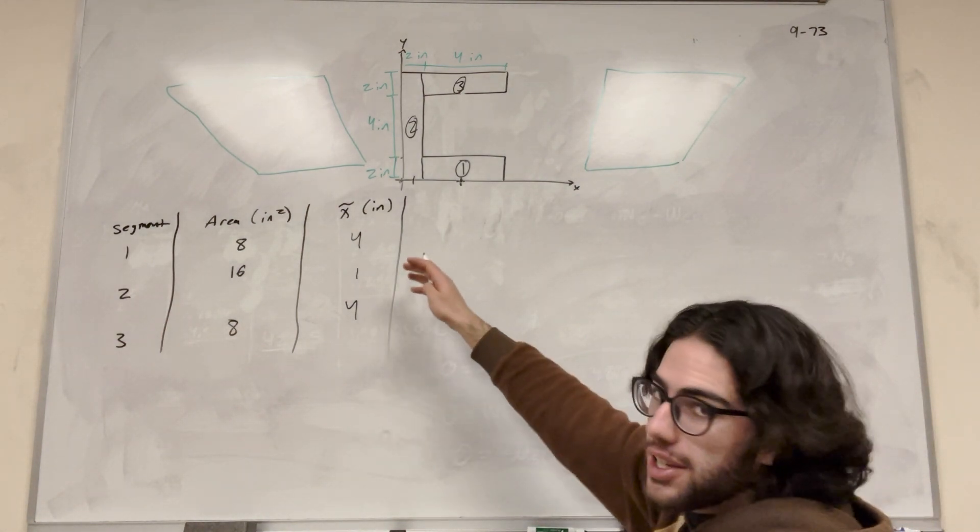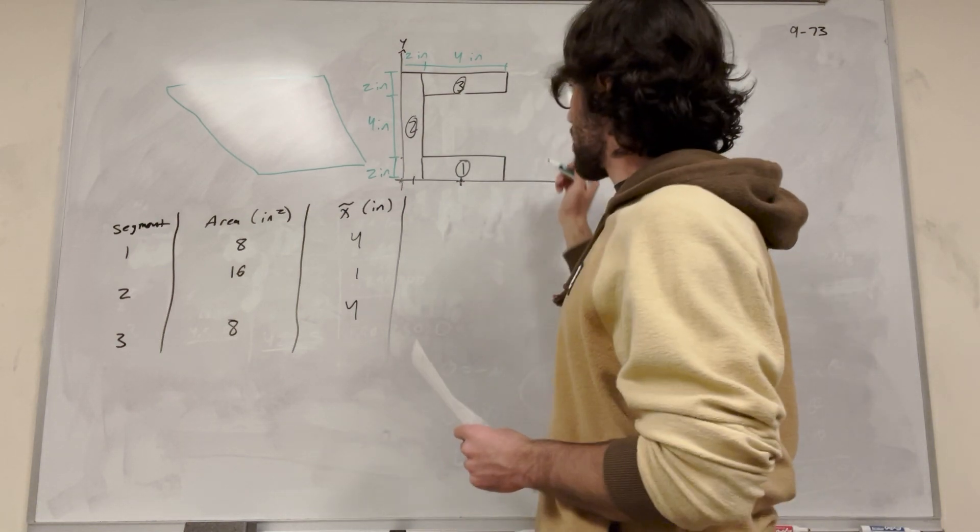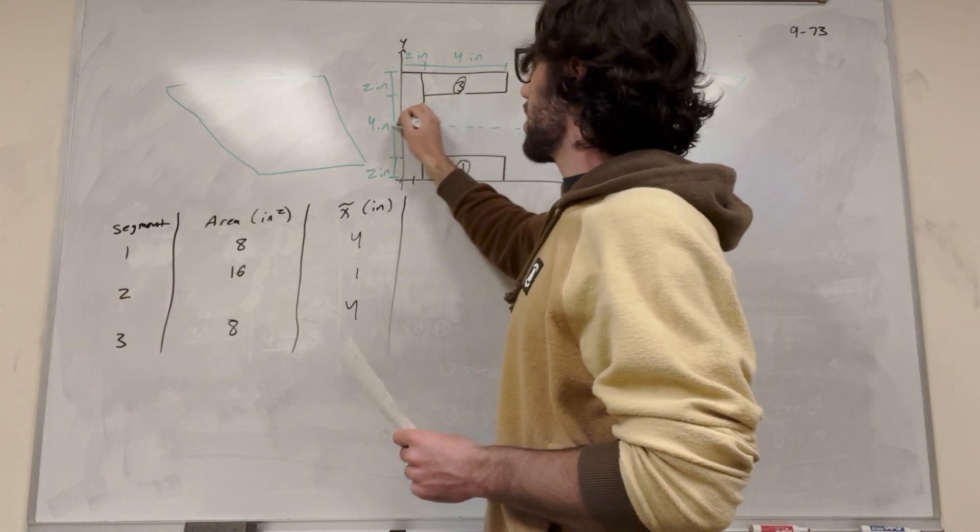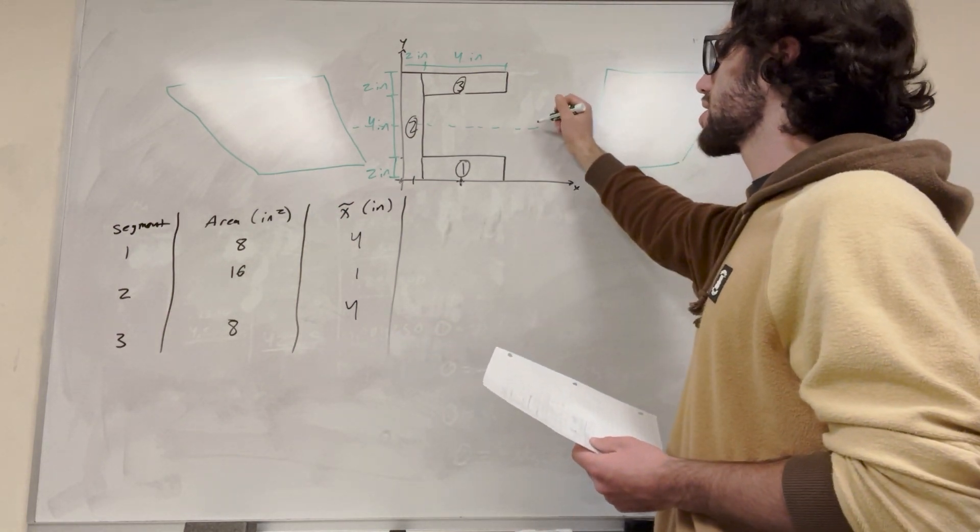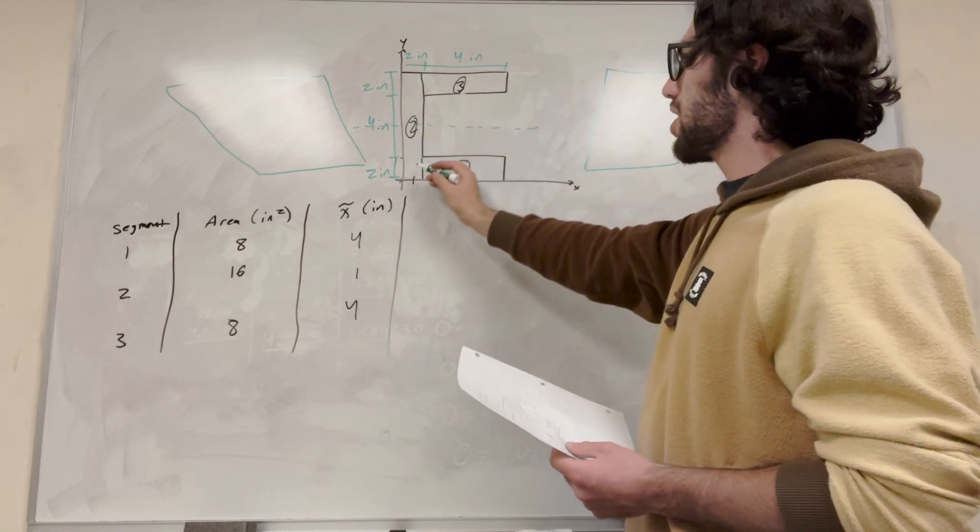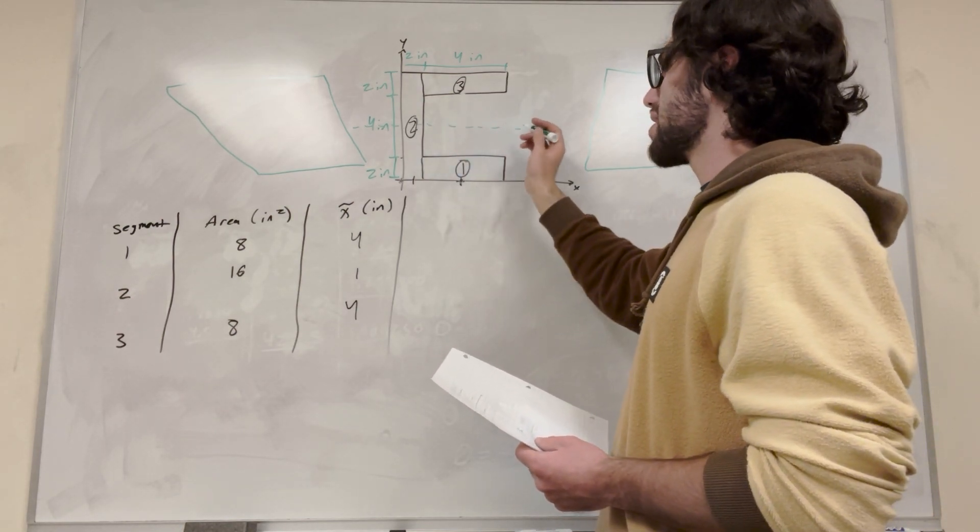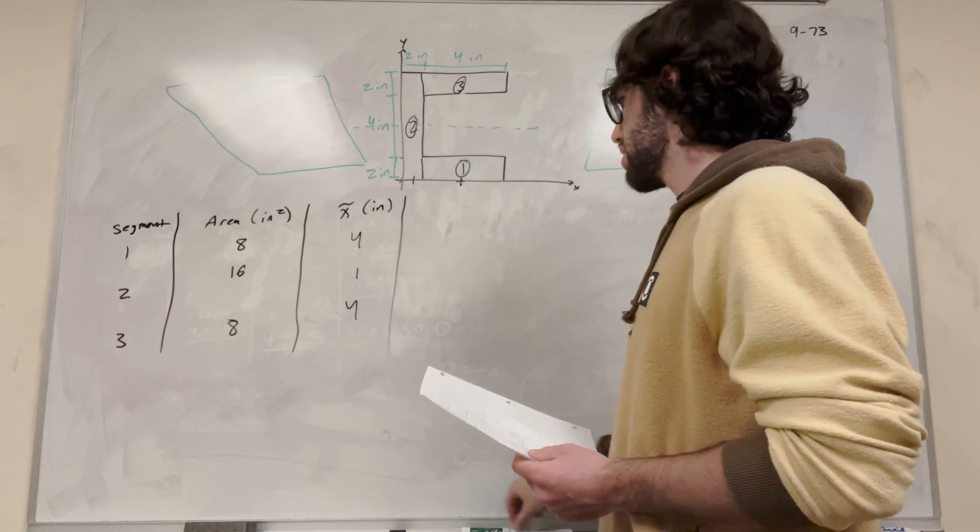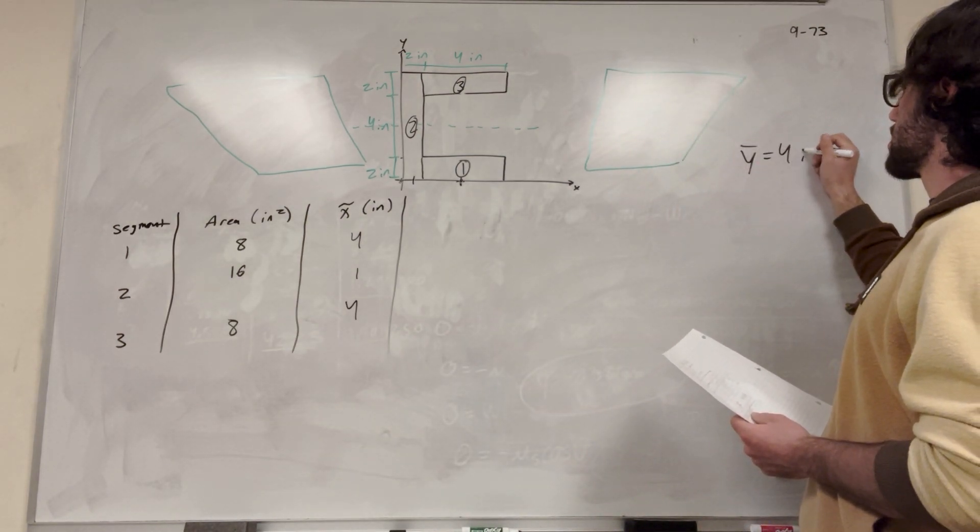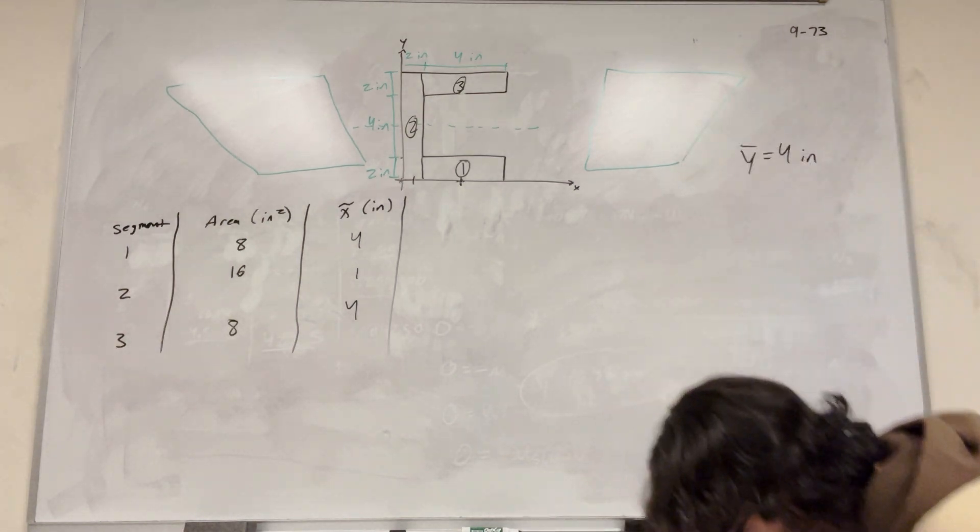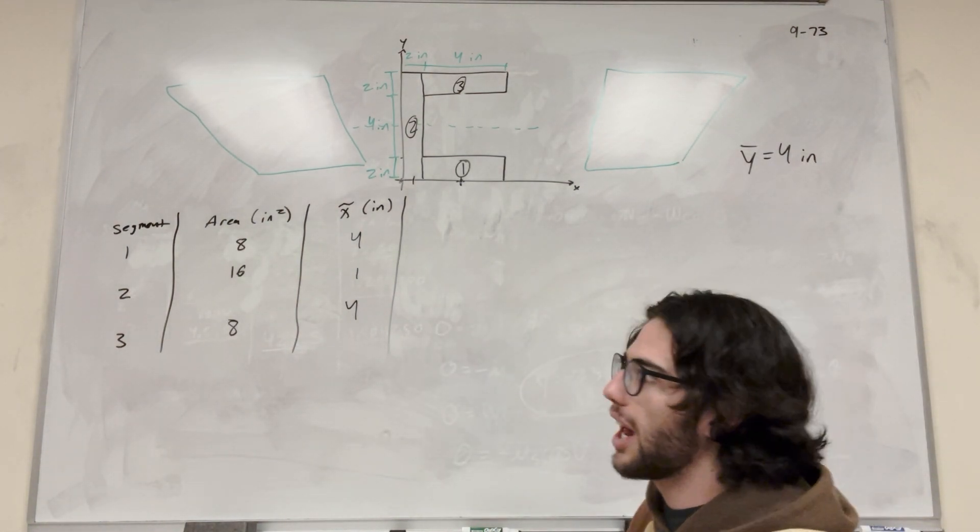So now we can do this for y tilde, but let's just go ahead right now and figure it out. So we see that our graph is symmetrical along here, right? So if you have something that's symmetrical, you know the center of mass is just going to be across the symmetry. So the symmetry here is two inches up plus another two inches. So we know that the y center of mass is going to be four inches up. So let's just write that, right? We know right away y bar is equal to four inches.